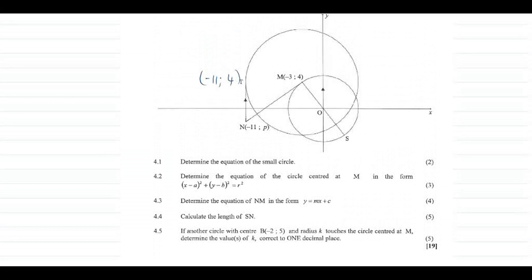Question 4.4: calculate the length of SN. We start by identifying where line SN is on our diagram. To calculate the length of SN we use the distance formula, but to use it we need both coordinates of S and the coordinates of N. We are missing the y-coordinate of N and we are missing both coordinates of S.